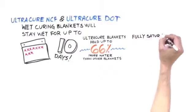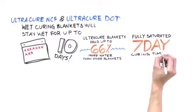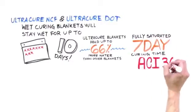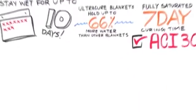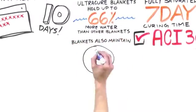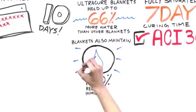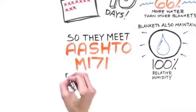This results in a fully saturated blanket for the 7-day curing time that's called out in ACI 308. The blankets also maintain 100% relative humidity so they meet the AASHTO M171 requirements too.